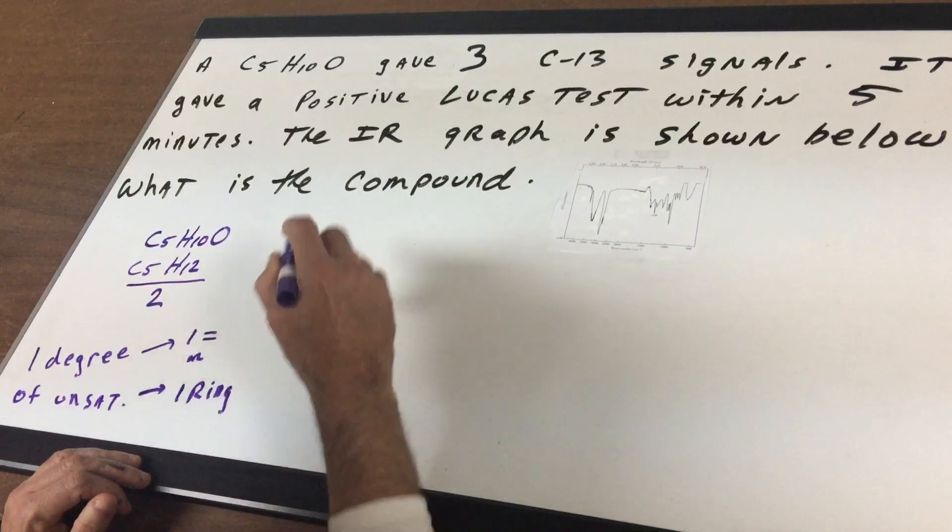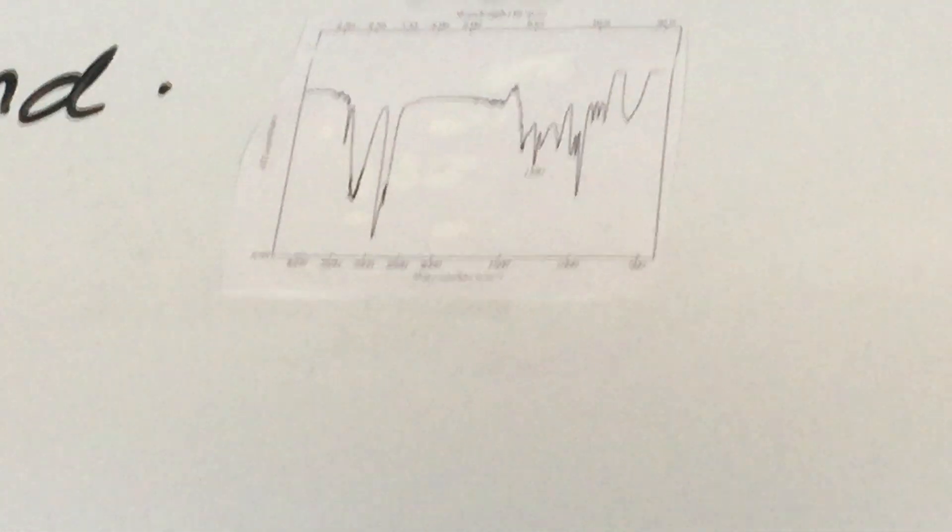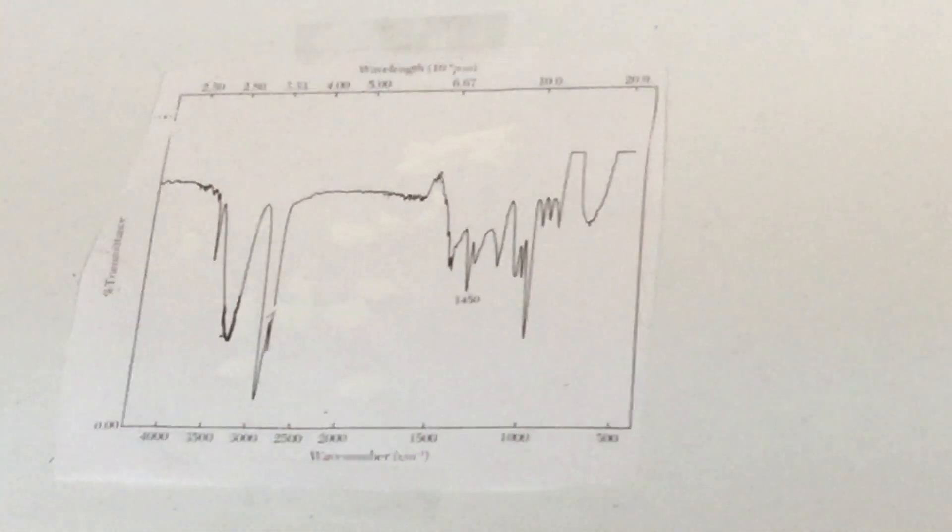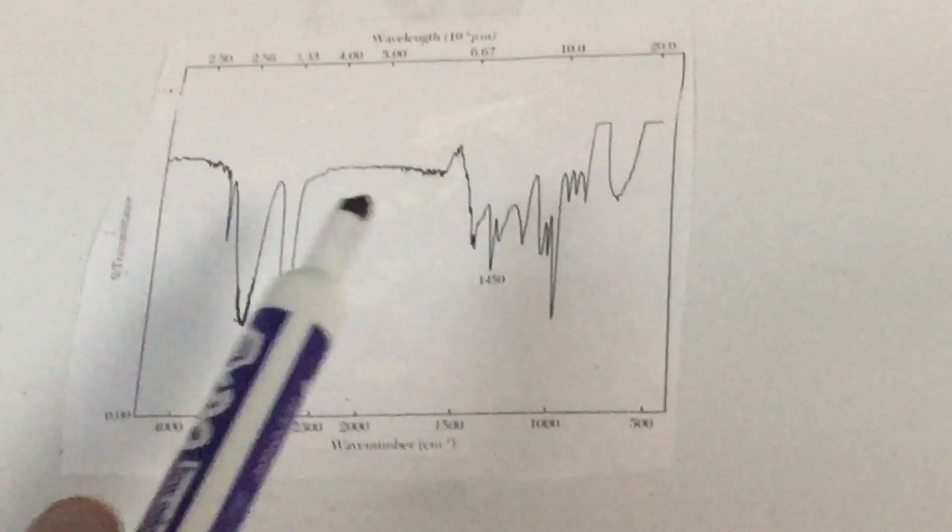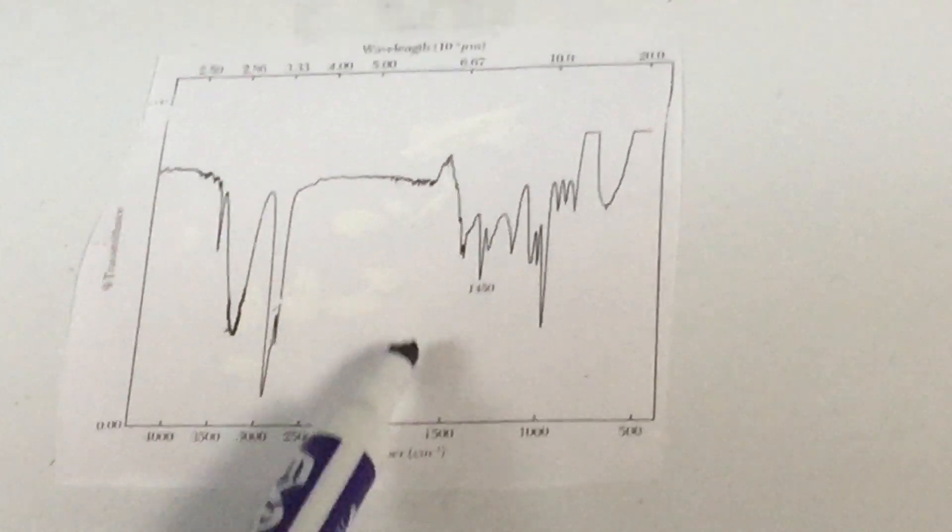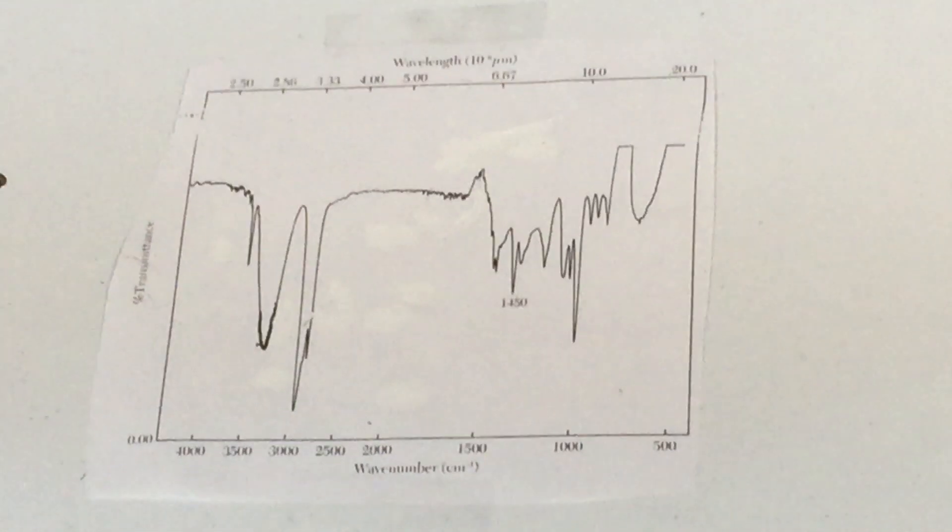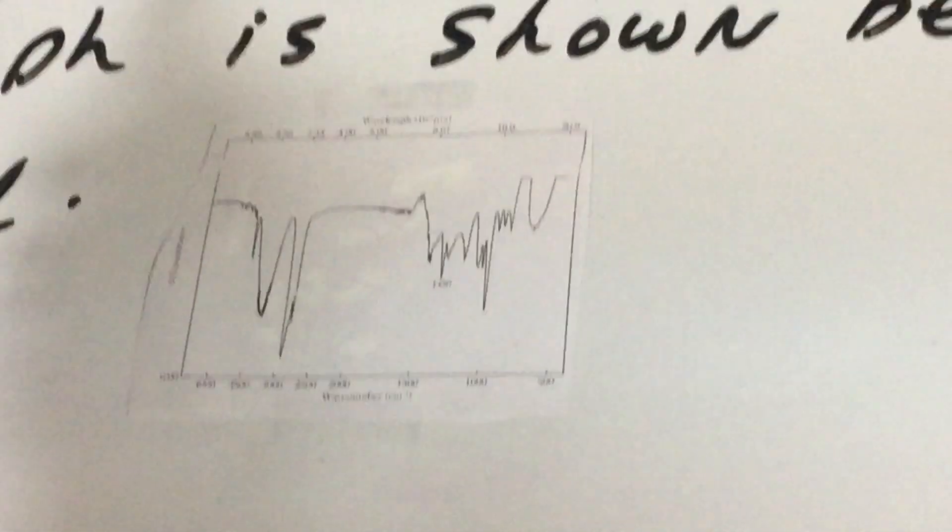Now what that means is the compound either has one double bond or one ring. So I got that piece of evidence. I know there's a double bond or a ring. Now I would like you to go to the IR graph for a minute and I want you to take a good look at something. If there was a double bond, I would see a spike at around 1650, and as you can see, the 1650 would be somewhere down here and I don't see that. I do not believe that there is a double bond present.